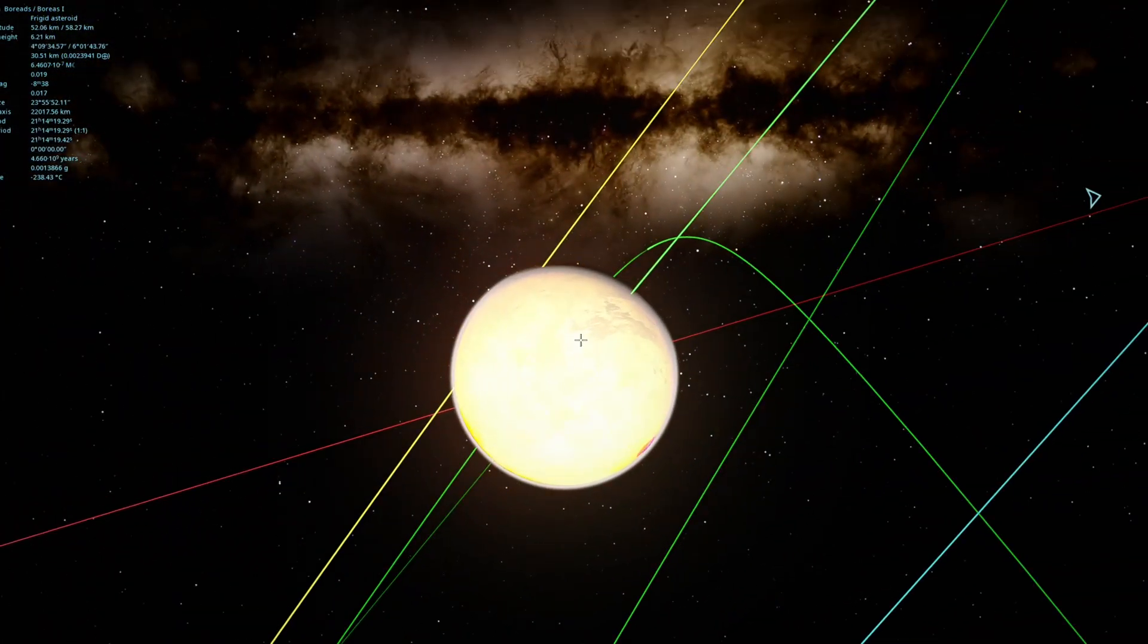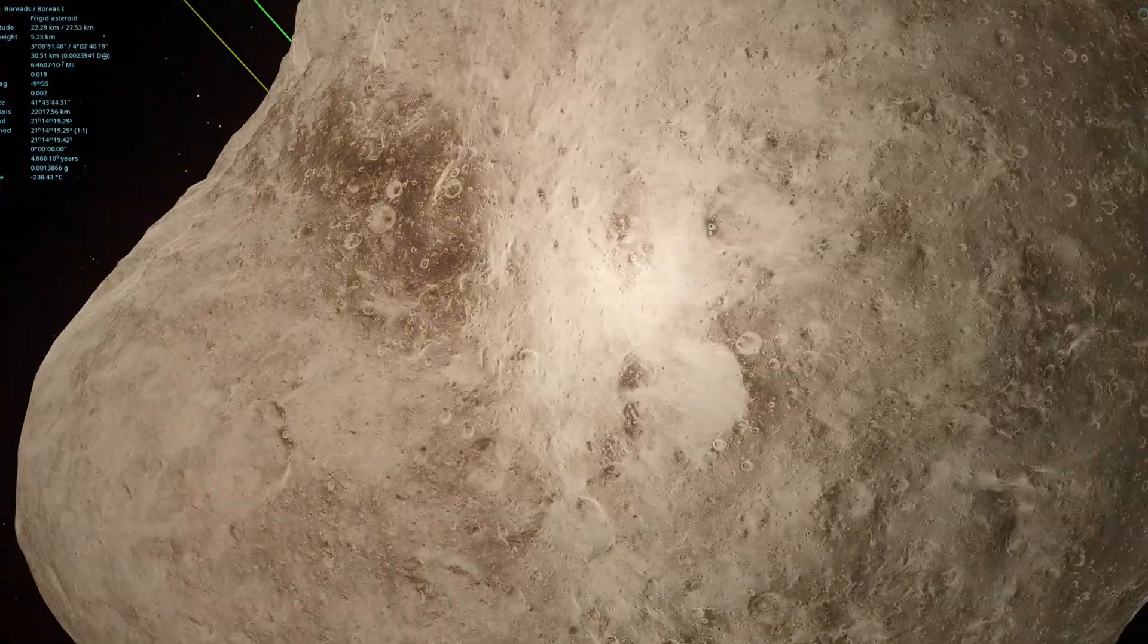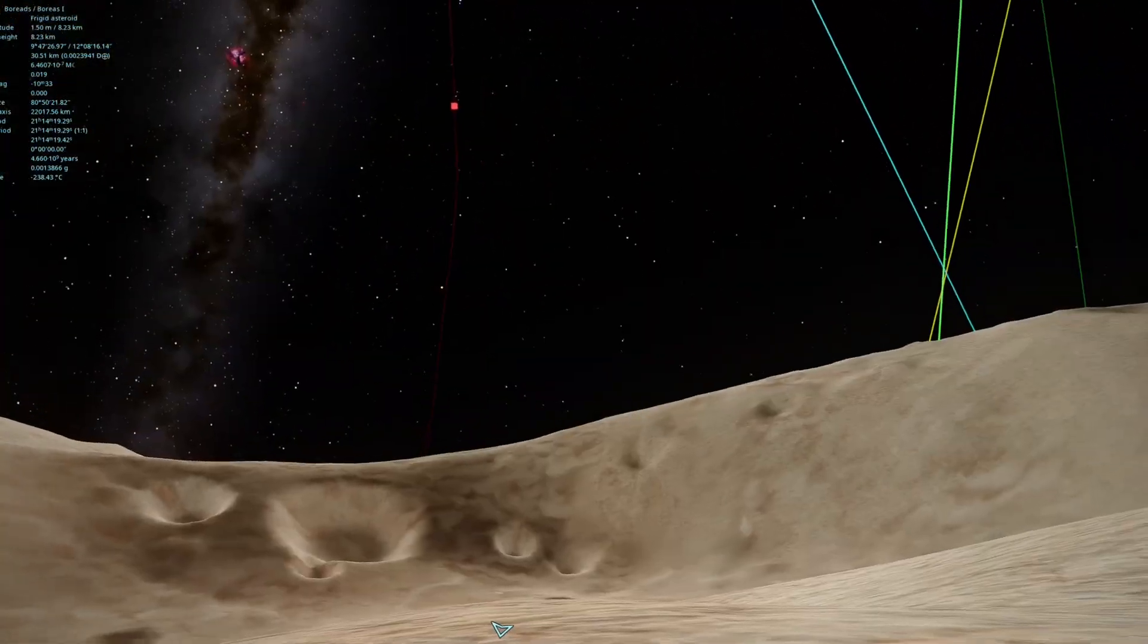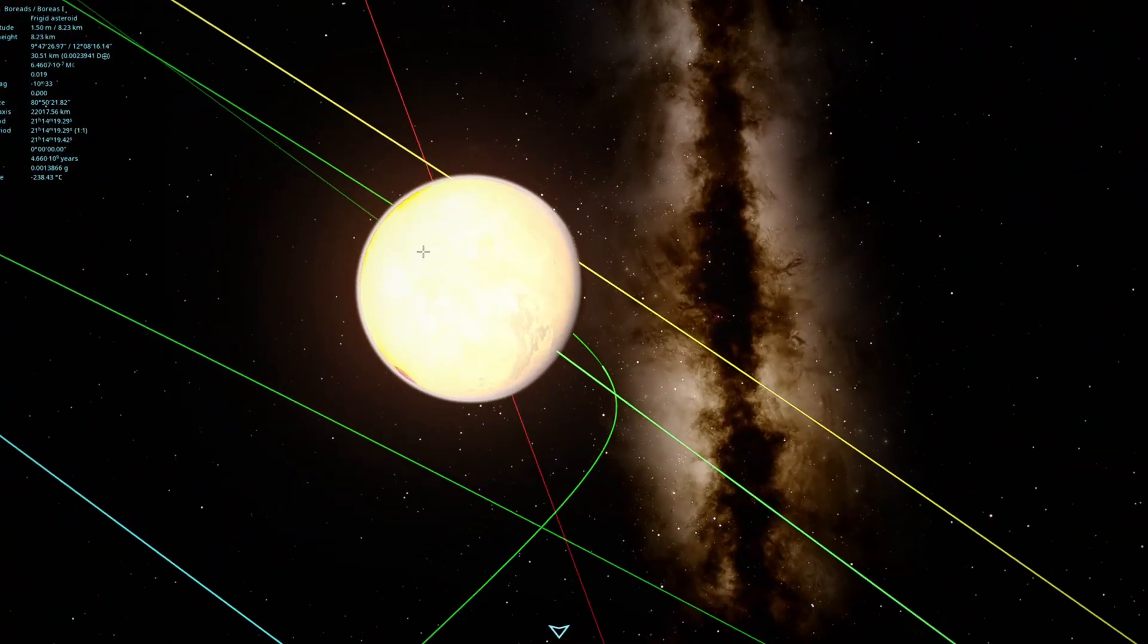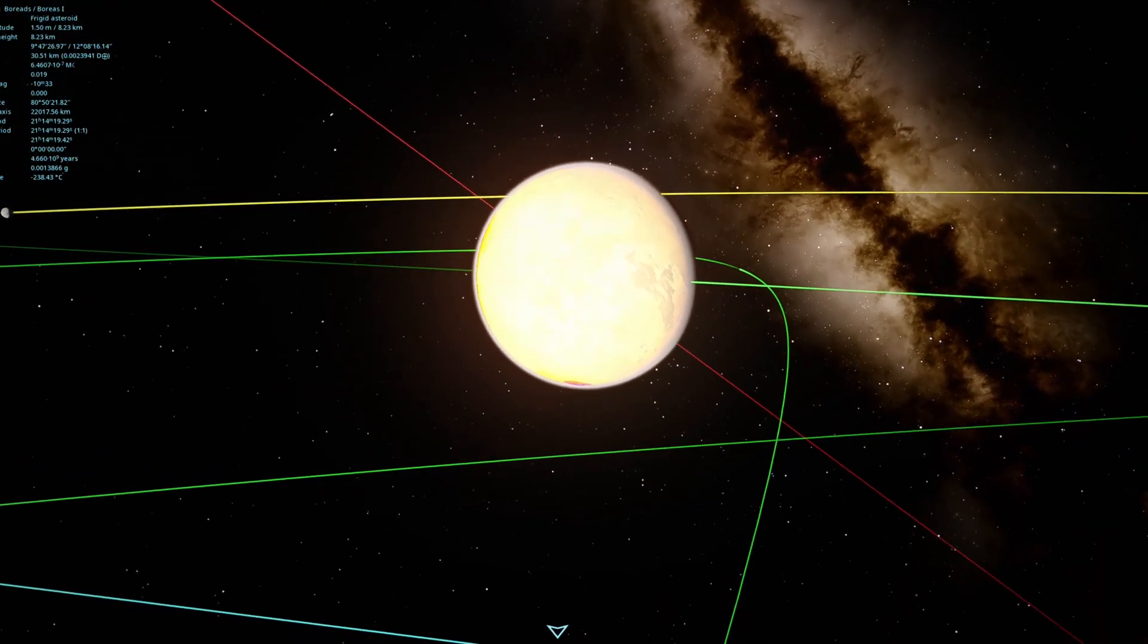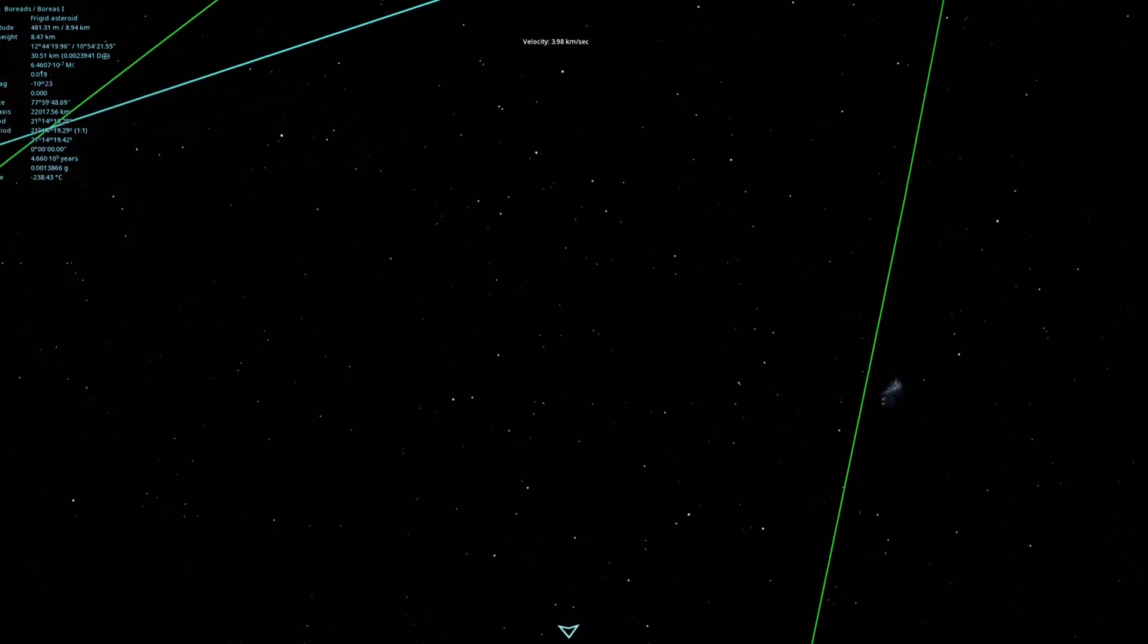I don't know why it's so bright, might be a problem with my shader mod. The nighttime side here is very bright because of all the light reflecting off the gas giant above us. Let's see if we can find the third moon.